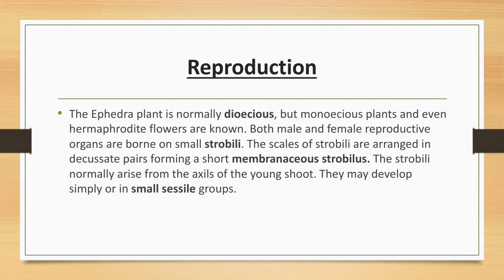Reproduction: The Ephedra plant is normally dioecious, but monoecious plants and even bisexual hermaphrodite flowers are also well known. Both male and female reproductive organs are borne on small strobili. The scales of the strobili are arranged in decussate pairs forming a short membranous strobilus. These strobili normally arise from the axil of the young shoot and may develop singly or in small sessile groups.